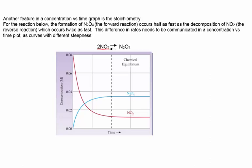Another important feature in concentration versus time graphs for reactions at equilibrium is to relate the stoichiometry to the curves for the reactants and the products.